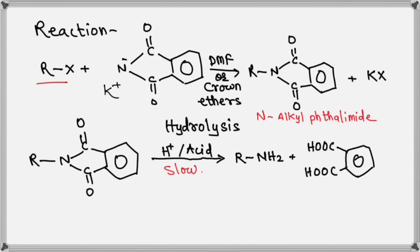For example, R-X when treated with potassium salt of phthalimide in presence of solvent like DMF, non-protic aprotic solvent or crown ethers, it produces N-alkyl phthalimide and its salt, potassium salt.